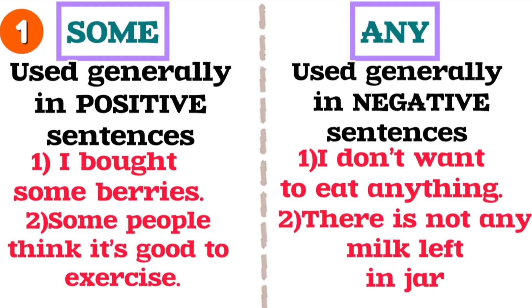Rule number 1 of the pronoun 'some': it is generally used in positive sentences. For example, 'I bought some berries' or 'Some people say that it's good to exercise.' Rule number 1 for the pronoun 'any': generally, the pronoun 'any' comes in negative sentences. For example, 'I don't want anything,' 'There isn't anything,' or 'There isn't any milk left in the jar.'